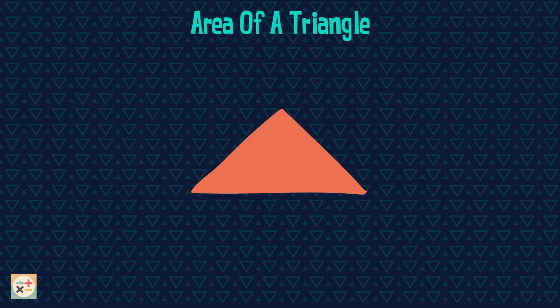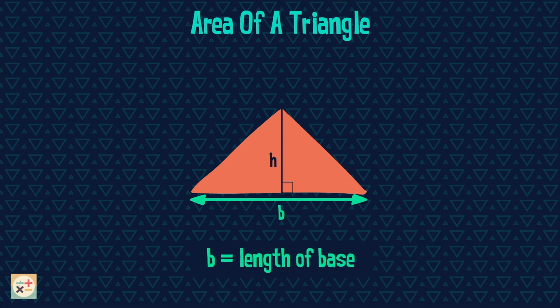Let's have a look at this triangle. B represents the length of the base and H represents the height.